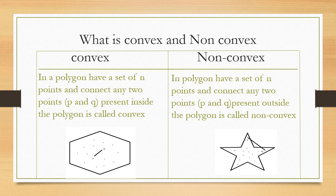First, we know what is convex and non-convex. Convex: in a polygon, a set of endpoints where connecting any two points P and Q present inside the polygon is called convex. Non-convex: in a polygon, a set of points where connecting any two points P and Q present outside the polygon is called non-convex.